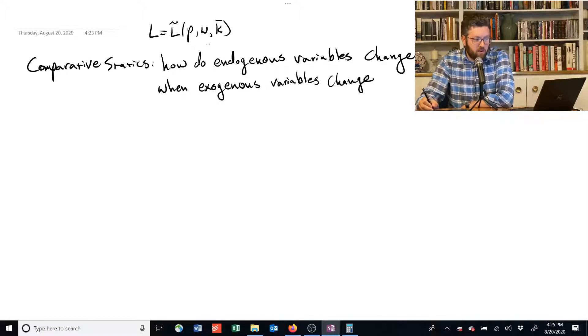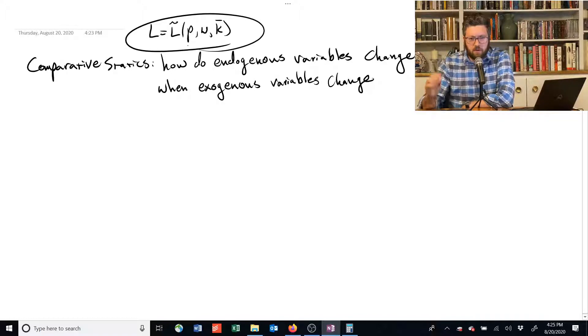So we know that the solution for the short-run profit maximization problem is going to give us labor, and it's going to be some function of the price, the wage rate, and the capital stock.